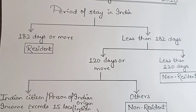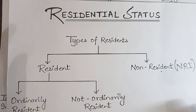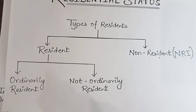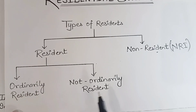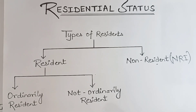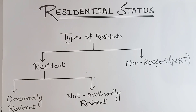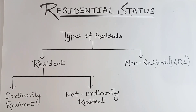So that was residential status. We are studying this because ordinary resident, not ordinary resident, and NRI all have different taxability. An NRI will obviously be taxed less; an ordinary resident will be taxed the most; and a not ordinary resident will be taxed comparatively less than an ordinary resident. We covered only the residential status of an individual today. In the next class, we will see the residential status of firms, HUF, companies, and other persons.